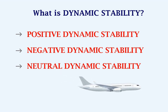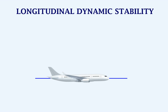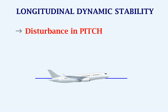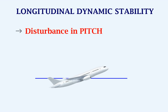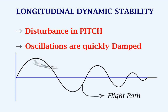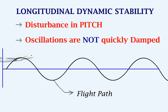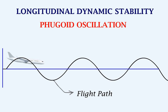The aircraft should have positive dynamic stability. Now let's look at a few cases, starting with longitudinal dynamic stability. This stability is applicable if the aircraft is subject to a disturbance in pitch. The oscillations should be quickly damped and the aircraft should return to its original attitude. But if the oscillations are not quickly damped, then it is called phugoid oscillation.